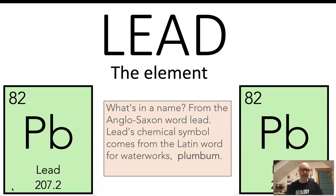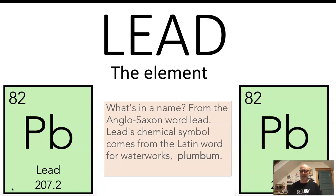Let's start with lead the element. You're going to dig back a little bit into the chemistry classes you've had, maybe in high school, maybe in college. First thing we think about is where does the name come from? It turns out it's an Anglo-Saxon word: lead. But the symbol is PB, which has nothing to do with lead until you go back to the Latin — it's the Latin word for waterworks or piping: plumbum. We carry that into English today with plumbers. PB is the abbreviation in the periodic table for lead.